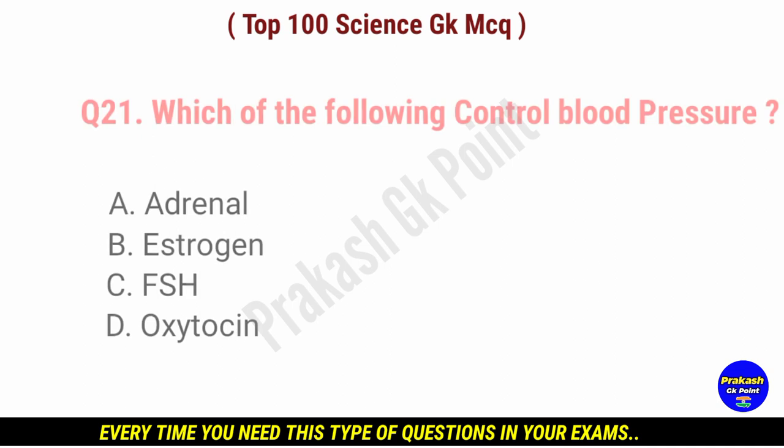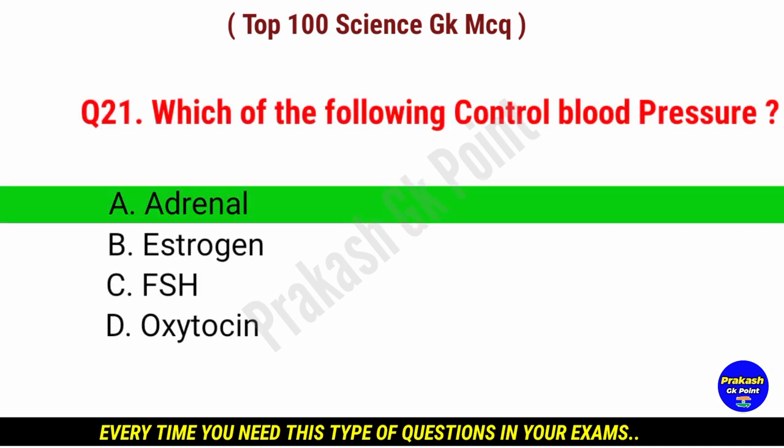Which of the following controls blood pressure? Answer: option A, adrenal.